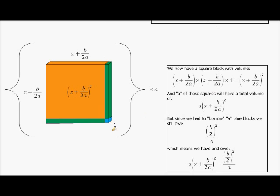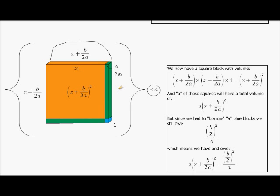But this is now what I have. I've got a complete squares — a of these complete squares if I borrowed enough blue blocks to fit each orange sheet. Now this whole square has a width from this end to that end of x, which is this width, plus that width, which we remember is b over 2a. So in total, it's got a width of x plus b over 2a.